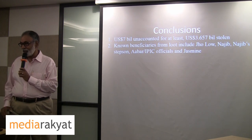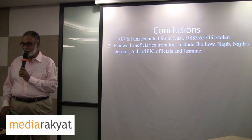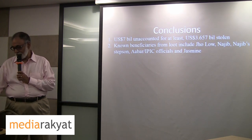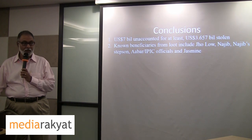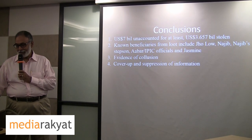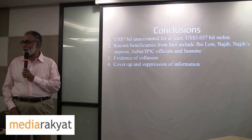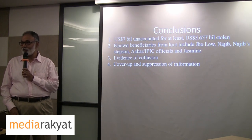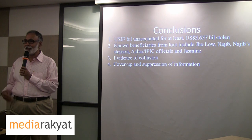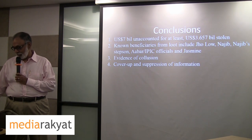Known beneficiaries from the loot include: JOLO was the biggest, then Najib the second largest, Najib's stepson Reza Aziz, AABAR and IPIC officials, and Jasmin Lut. These people have been known to be the direct beneficiaries of this looting. There is plenty of evidence of collusion, cover-up, and suppression of information in Malaysia — including the removal of the previous Attorney General and the last-minute appointment of somebody else, with the new Attorney General actually giving a clean bill of health to Najib. So there has been a lot of cover-up and suppression of information.